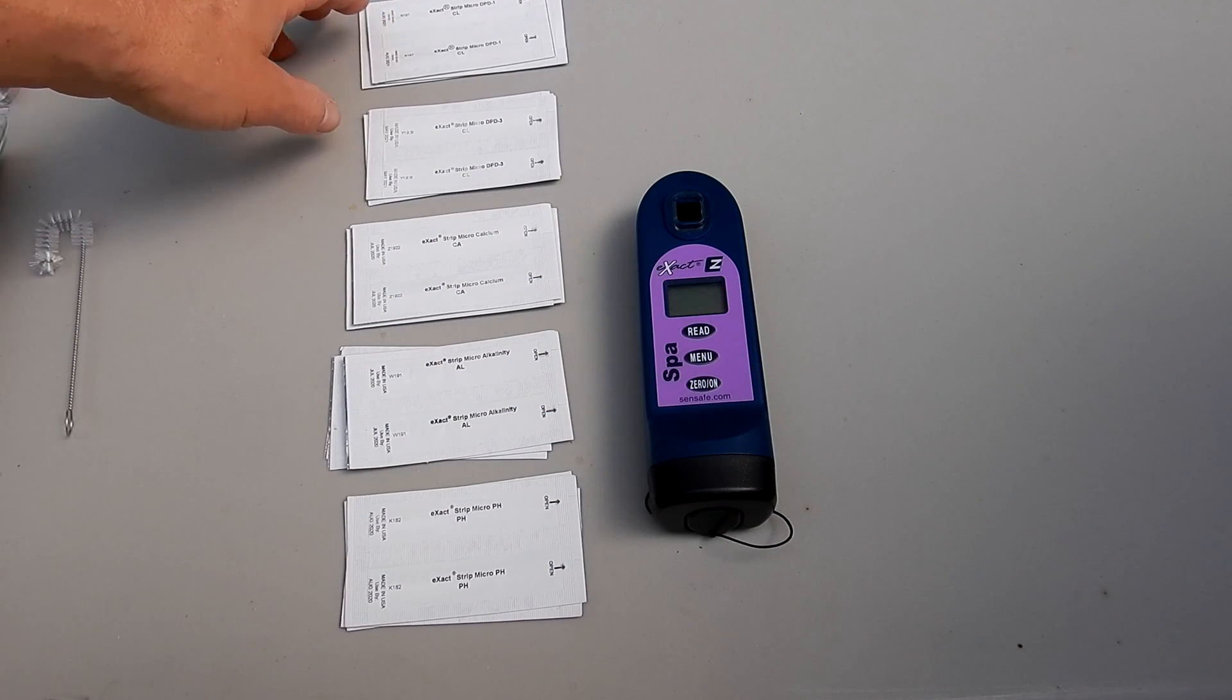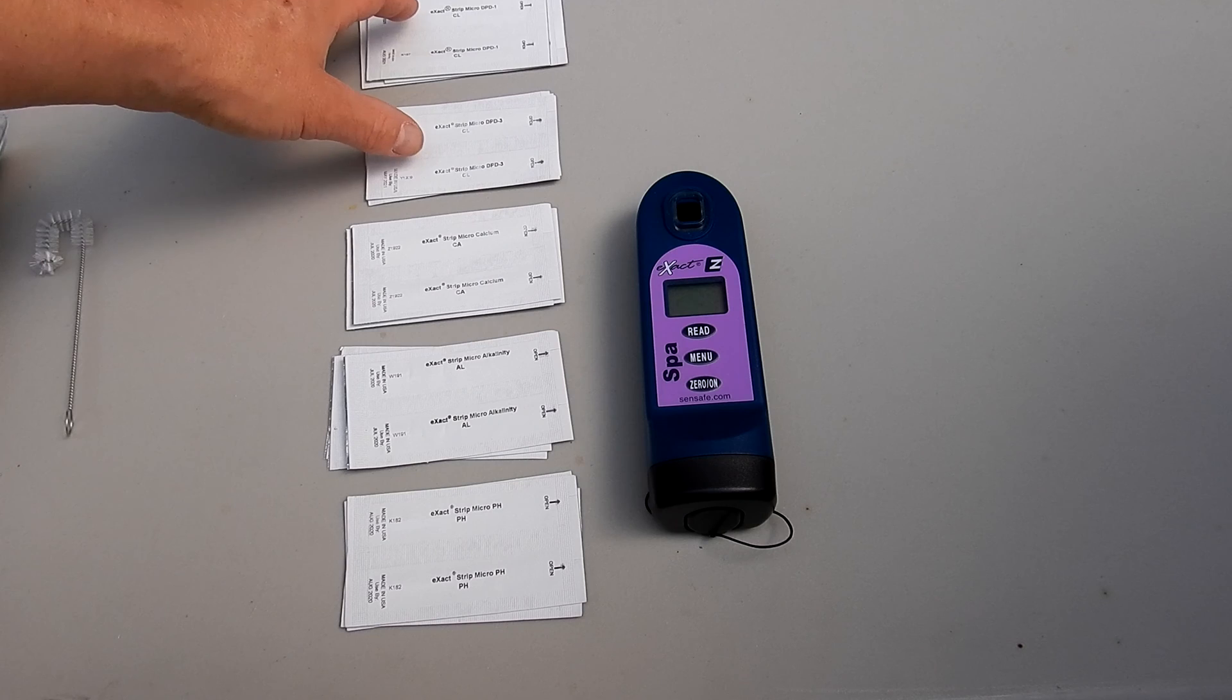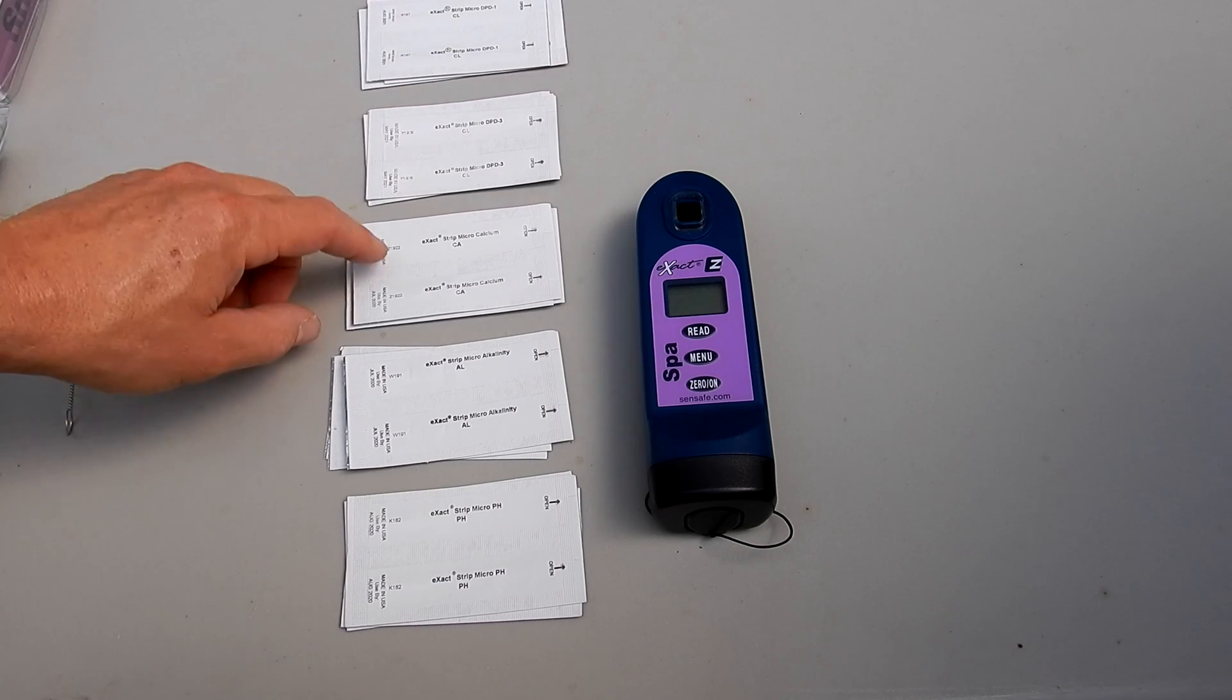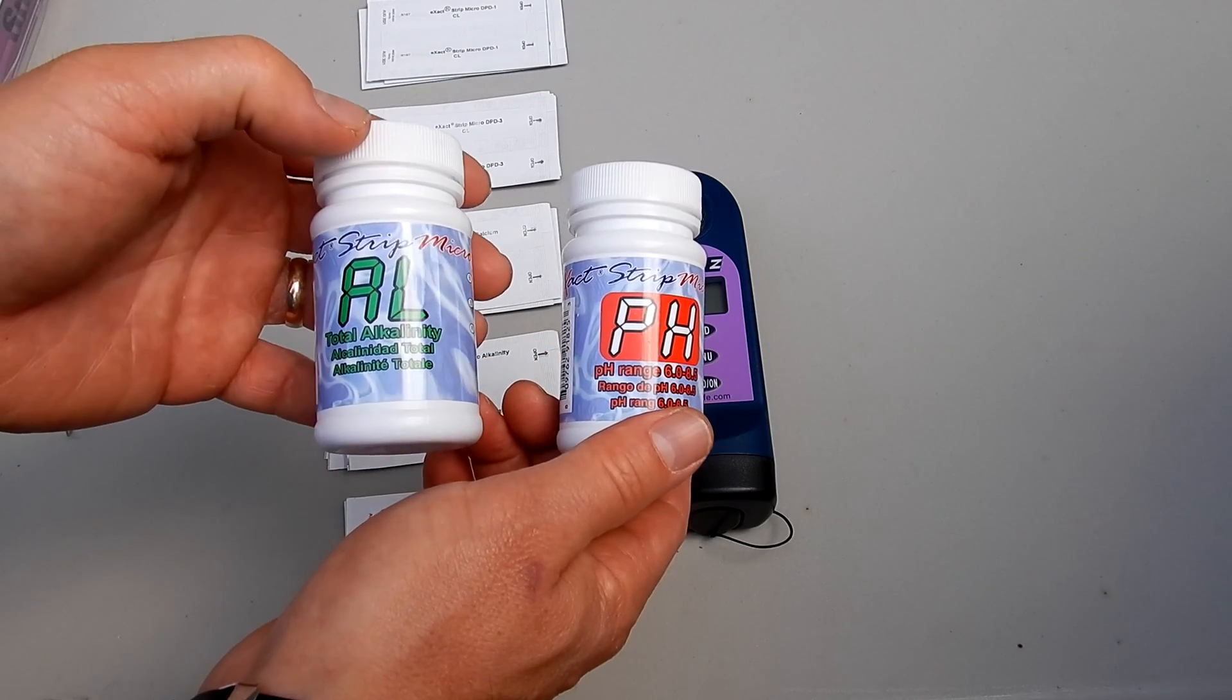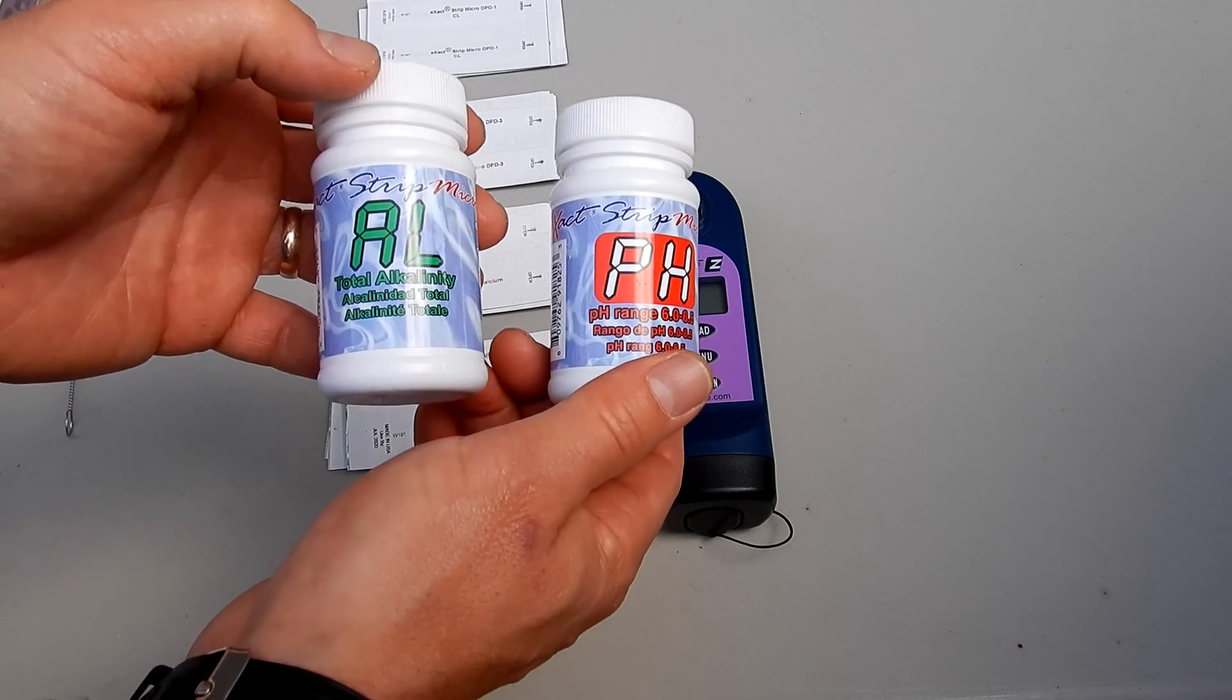Also included are some sample packs of the Exact Strip Micros. These are used to test the free chlorine and total chlorine, calcium hardness, alkalinity, and pH. You can also order more of the Exact Strip Micros for your testing. These are sold separately.